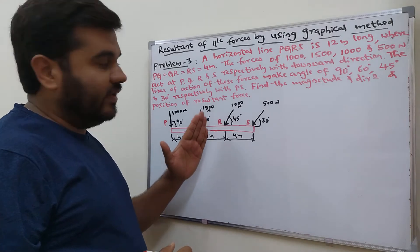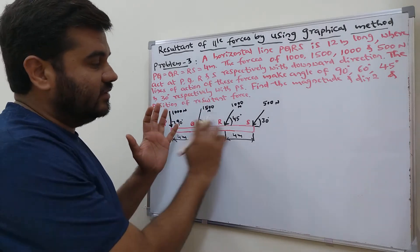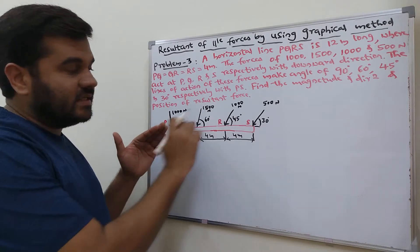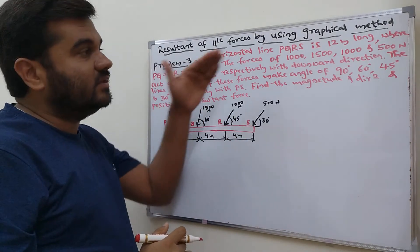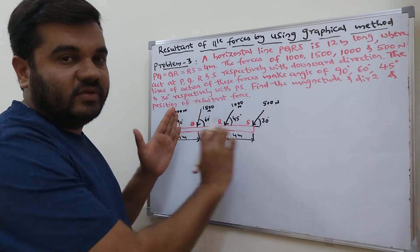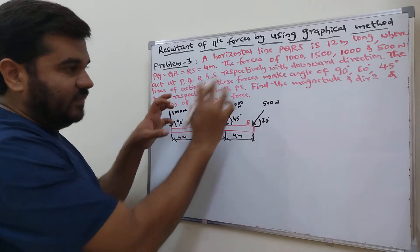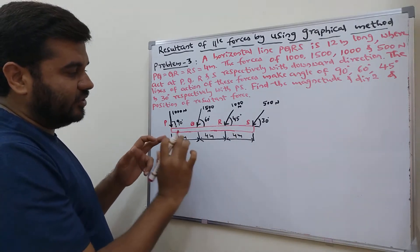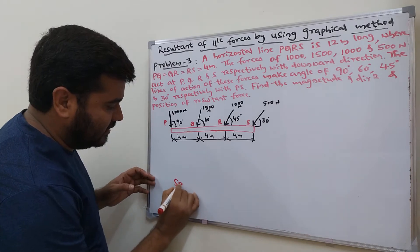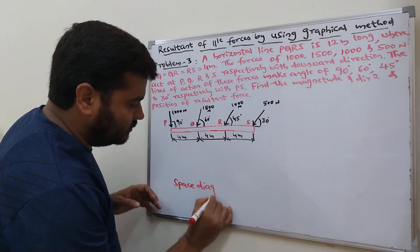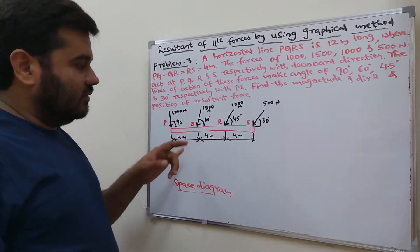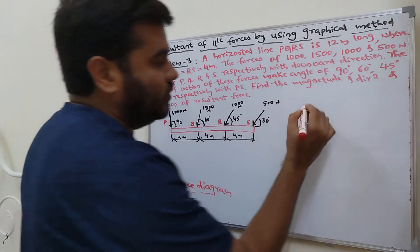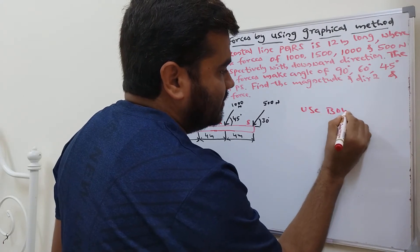You need to find the resultant and its direction and location. We are using the graphical method. These are not strictly parallel forces, but you can still apply the graphical method here. Draw the problem as given in the space diagram. This is called the space diagram. The first step is to mark all four given forces using Bow's notation.